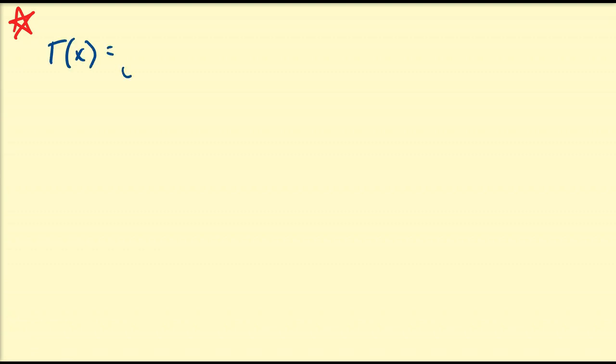Hello there. In this video, we're going to look at some additional properties associated with the gamma function. Recall the gamma function, gamma of x, is defined to be equal to the integral from 0 to infinity of t to the x minus 1 times e to the minus t dt. This is typically defined for any x greater than 0. In this video, we're going to be primarily focusing on the logarithmic derivative of gamma, which some people refer to as the digamma function.